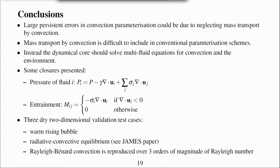Some closures are presented so that the multi-fluid equations represent dry Boussinesq convection. We set the pressure of the individual fluids based on the divergence within each fluid, and we use the dynamic entrainment set by divergence. With these simple closures, we have reproduced statistics of three validation test cases using a single-column two-fluid model. The first is a rising bubble. A radiative equilibrium test case is presented in our James paper, but not described here.